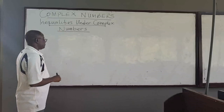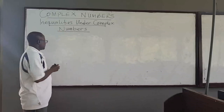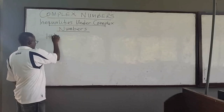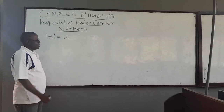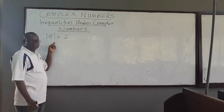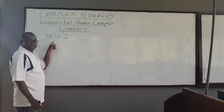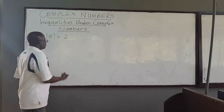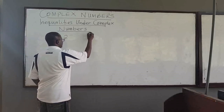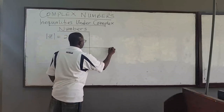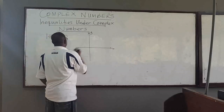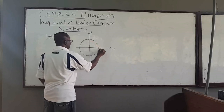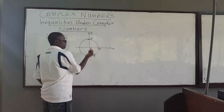From previous lectures, we know that the absolute value of z equal to 2, for instance, represents a circle with center the origin (0,0) and radius of 2. So on the Argand diagram, with the imaginary and the real part, this is basically the circle of radius 2.